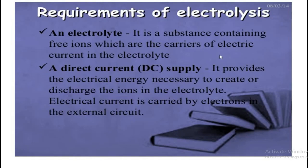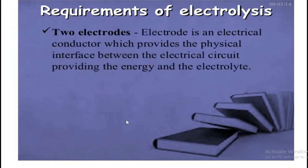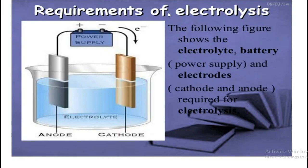The requirements for electrolysis: an electrolyte is a substance containing free ions which carry electric current. The DC supply provides electrical energy to carry out a non-spontaneous chemical reaction — it is necessary to discharge the ions in the electrolyte. The external circuit carries current by electrons. An electrode is an electrical conductor that provides the physical interface between the electrical energy source and the electrolyte.